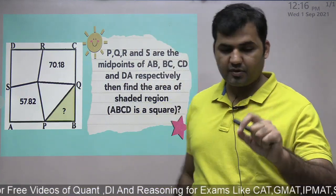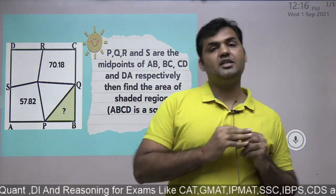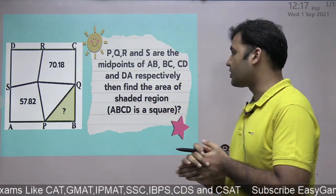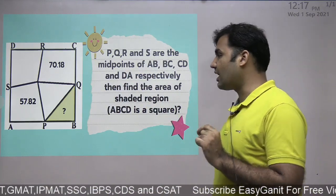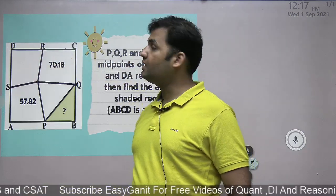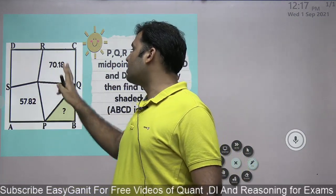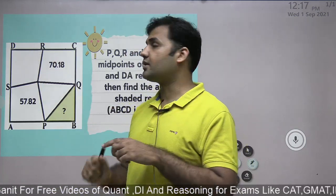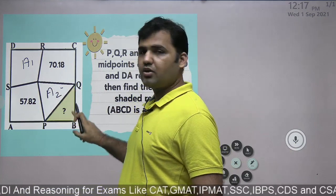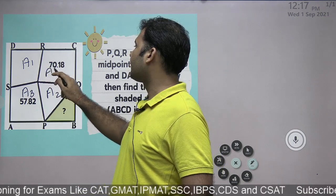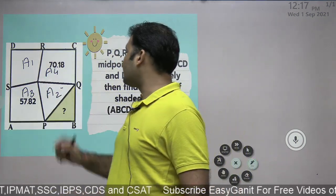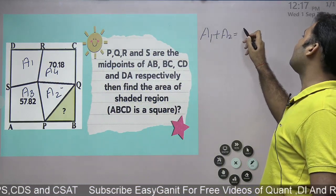Let me first tell you the direct property, then we will learn the complete derivation behind it. The rule is: whenever inside a square you take a point and join it with all the midpoints of the sides, this will divide the whole square into four quadrilaterals. The rule says a1 plus a3 is the same as a2 plus a4 — that is, a1 plus a2 equals a3 plus a4. If you know this rule, this question is a cakewalk.